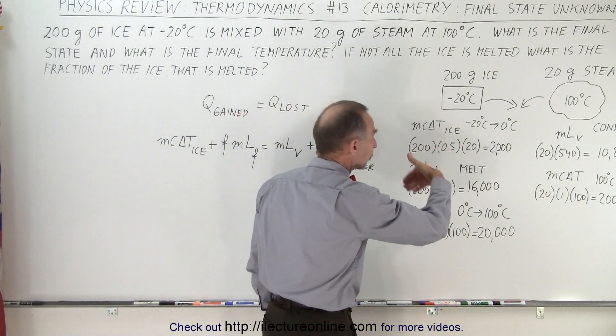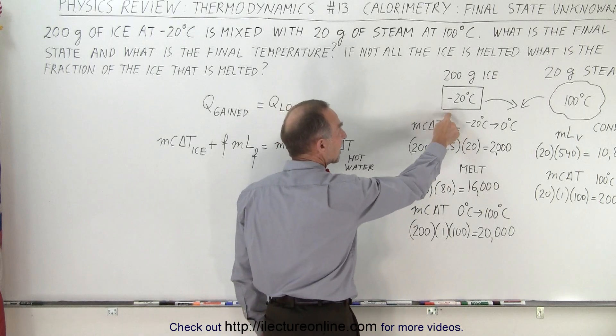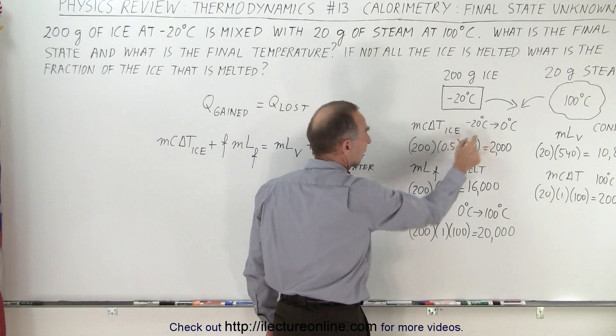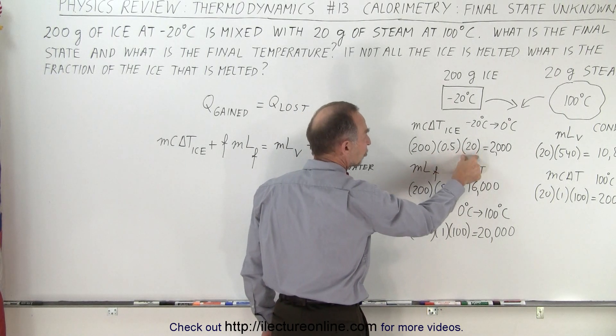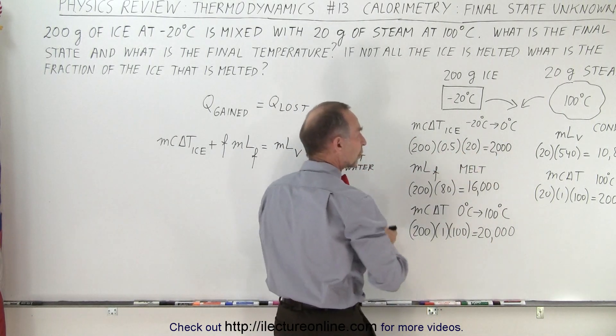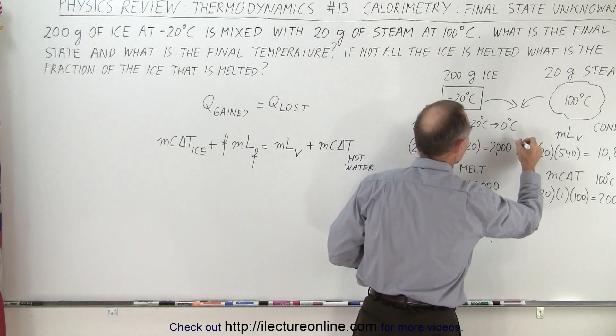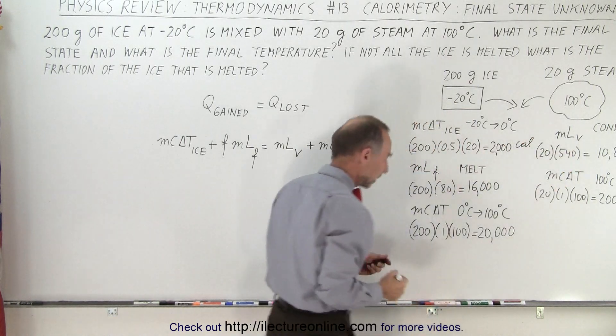So when we do that, we have to take the ice and go through three stages. First, we take the ice from minus 20 to 0, and that would take the mass times the specific heat of ice times the change in temperature. It'll take 2,000 calories. All these numbers are in calories.